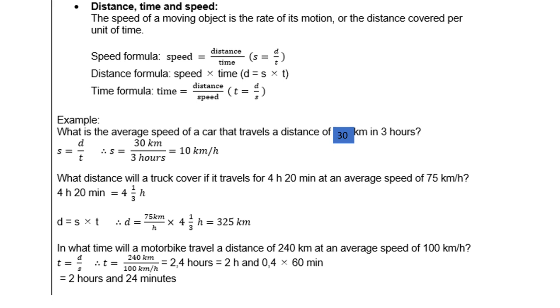Example: what is the average speed of a car that travels a distance of 352 kilometers in 3 hours? Using the formula, speed equals distance over time: 352 divided by 3, which gives approximately 117 kilometers per hour.